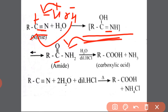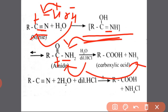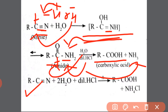This amide on hydrolysis forms the main product, that is carboxylic acid. Here, carbon is positively charged and nitrogen is negatively charged. So from water, H⁺ will approach towards NH₂ and will form NH₃, that is ammonia. And OH⁻ will approach towards the positively charged carbon and will form carboxylic acid. This reaction is also similar to the first reaction.